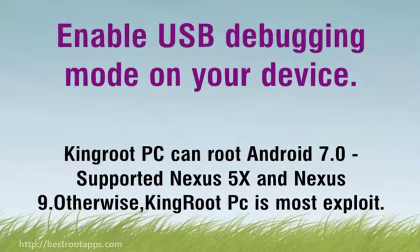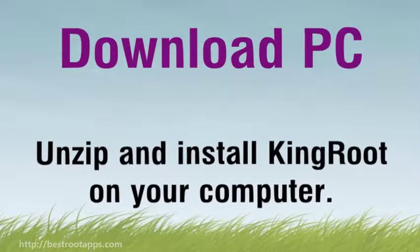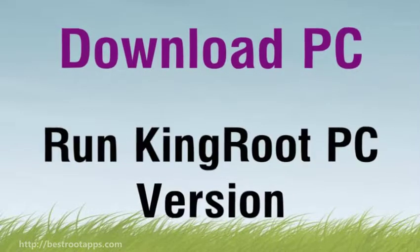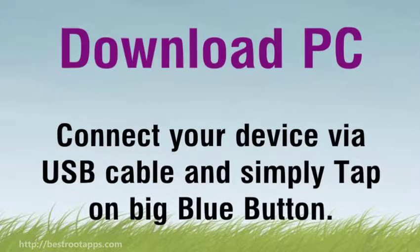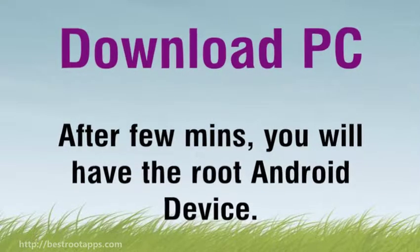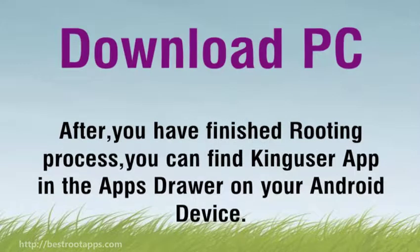How to root your Android device with Kingroot PC version: Kingroot PC can root Android 7.0, supporting Nexus 5X and Nexus 9. Download the PC version, unzip and install Kingroot on your computer, then run the Kingroot PC version. Connect your device via USB cable and tap the big blue button. After a few minutes, you will have a rooted Android device. You can then find the Kinguser app in the app drawer on your Android device.